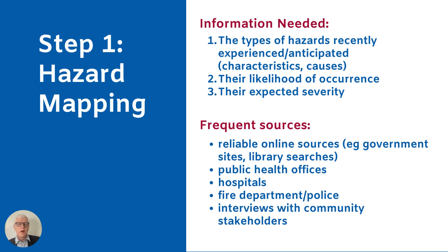The type of information you need includes a list of hazards that you may have recently experienced — and by recently, we're looking at the past 50 years for severe events — and the types of hazards you might anticipate, their characteristics and causes, how likely they are to occur, and their expected severity. You can do a lot of this from memory, but you can also use reliable online sources, government sites, library searches, reach out to public health offices, hospitals, fire or police departments, or talk to community stakeholders in leadership.